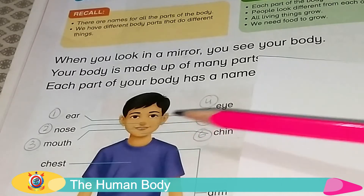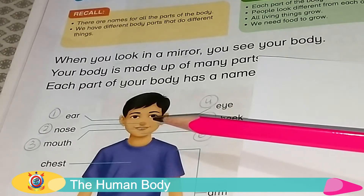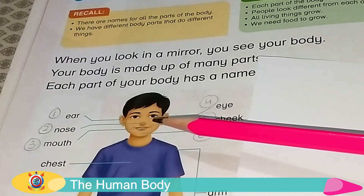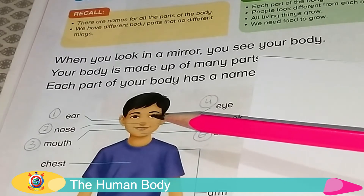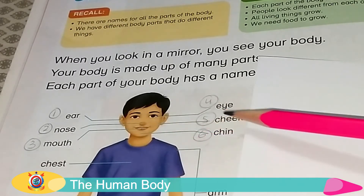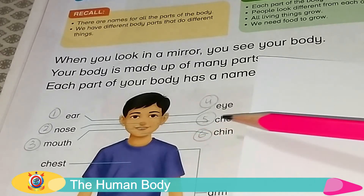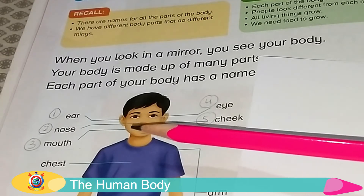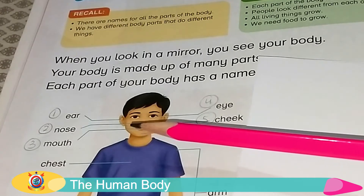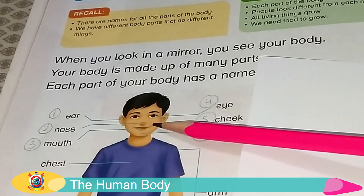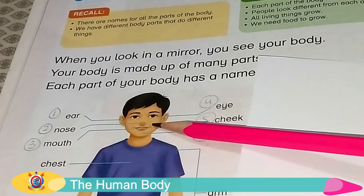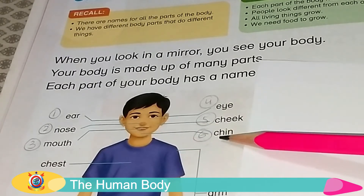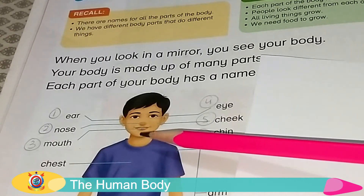Eye, eye. How many eyes do we have? We have two eyes. Cheek, cheek. We have two cheeks. This is cheek. Chin, chin. This is chin.